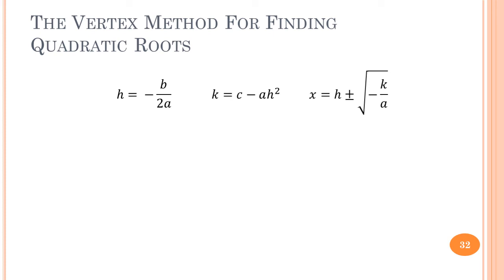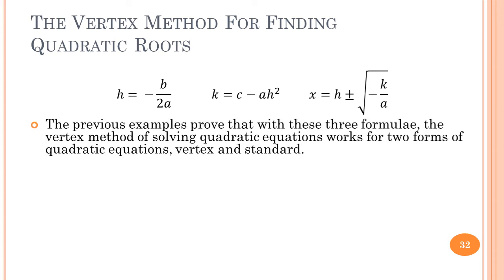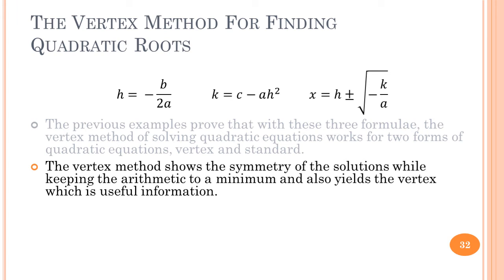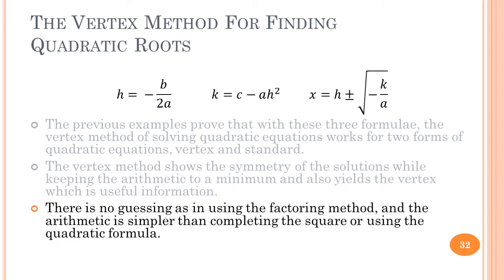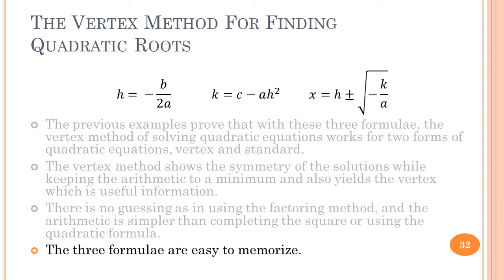Here it is: the vertex method for finding quadratic roots. With these three formulas, the vertex method works for both the vertex and standard forms of quadratic equations. The nice thing about the vertex method is it shows the symmetry of the solutions, keeps the arithmetic to a minimum, and also gives you the vertex — which is useful information, since quite often when a student is told to find the roots, they're also told to find the vertex. There's no guessing as in the factoring method, the arithmetic is simpler than completing the square or using the quadratic formula, and the three formulas are easy to memorize.